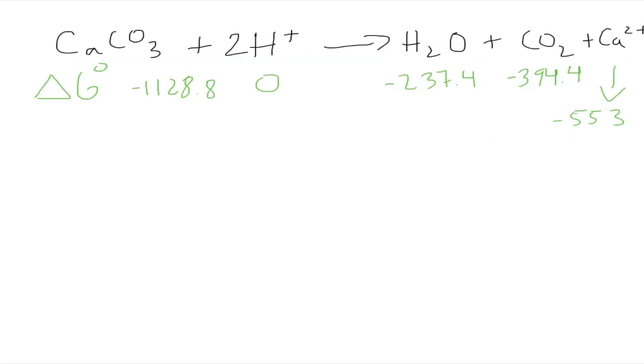Now let's solve a problem. Here we have a reaction, and our values are: for CaCO3 negative 1128.8, hydrogen has zero, water has negative 237.4, CO2 has negative 394.4, and calcium has negative 553.